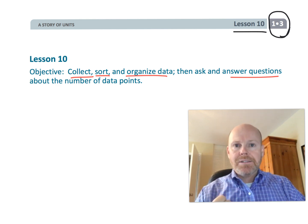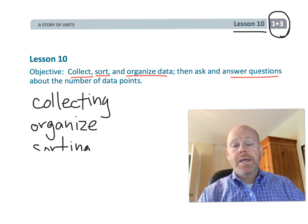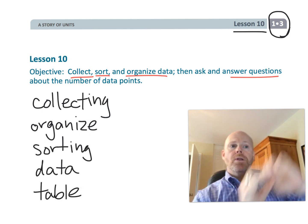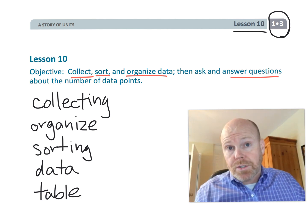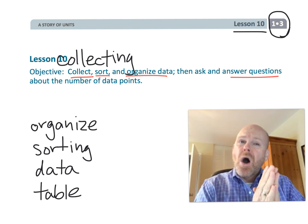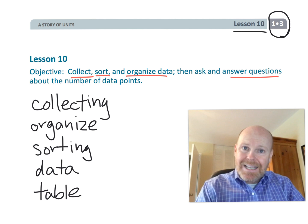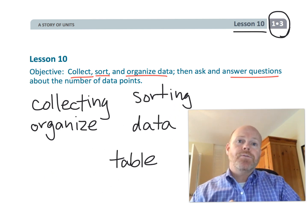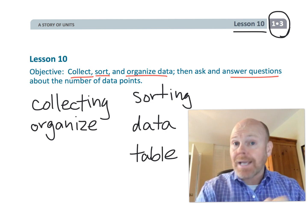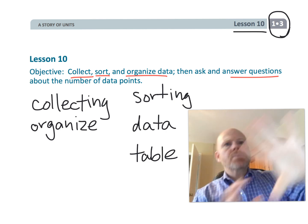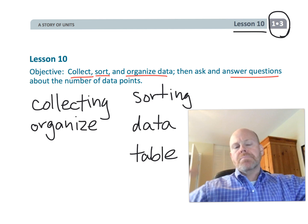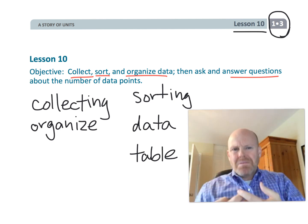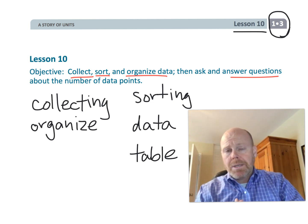Words like collecting, organize, sorting, data, and table should all be put up on a word wall for your students. Really, all of your students are academic English language learners, but this is especially helpful for your English as a second language students. So get all of these words, put them on a word wall, and draw pictures next to each word to represent what collecting means, what organize means, what sorting means, etc.